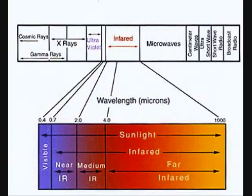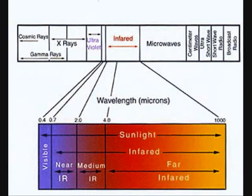As energy increases and wavelengths get shorter, we move to infrared. We cannot see infrared, but we feel it as heat because infrared has enough energy to carry heat. We can, however, build cameras that detect infrared and use them to produce heat maps and see in the dark.